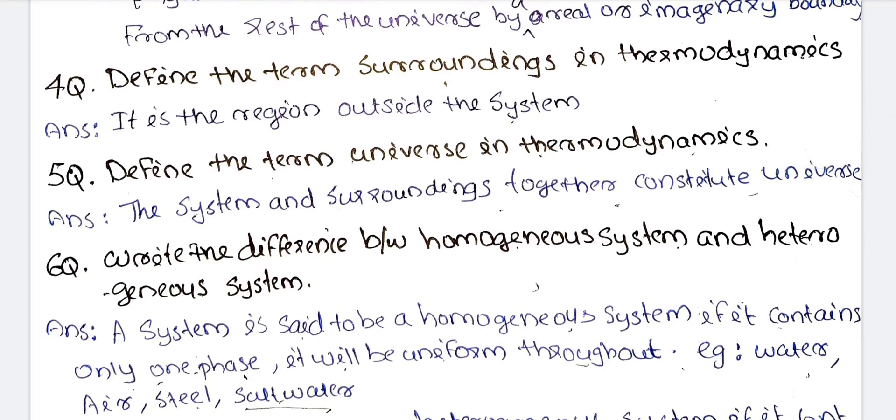Define the term 'surroundings'. It is the region outside the system — that is, the rest of the universe other than the system that we are studying.